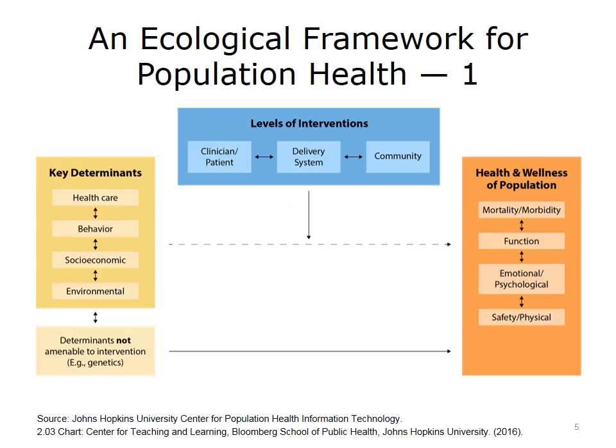This is a graphic developed by the team at the Johns Hopkins University Center for Population Health Information Technology, or CPHIT. We reviewed a variety of other authors, relying heavily on Dr. David Kindig at the University of Wisconsin, who has done a lot of work in this domain. We pulled together a graphic titled 'An Ecological Framework for Population Health,' with key determinants, the levels and sectors of interventions, and the different dimensions of outcomes. We use this to provide a framework for how one understands, potentially intercedes, and uses a variety of digital health information technology to improve the health of populations.